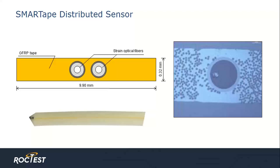The second sensing cable is called smart tape, and this is a thin tape suitable for installation on a flat surface, in particular steel, metal, or composite material embedding. The fibers are embedded in a composite thermoplastic tape with glass fiber reinforcements — visible as the small dots — while the sensing fiber is also visible here.